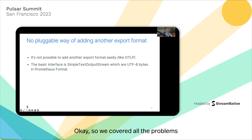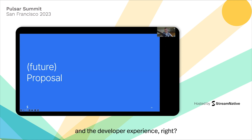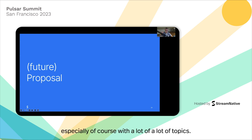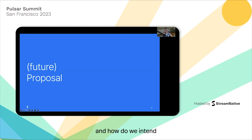So we've covered all the problems from the user experience and the developer experience. We know how problematic using metrics in Pulsar is, especially with a lot of topics. Now let's talk about the proposal, which is an approved PIP, and how we intend to solve everything.